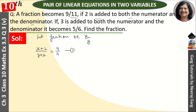Similarly आगे कहते हैं कि 3 is added to both numerator and denominator. अब हमने x plus 3 और y plus 3 करना है, that is equal to 5 by 6. यह हमारी second equation आई.